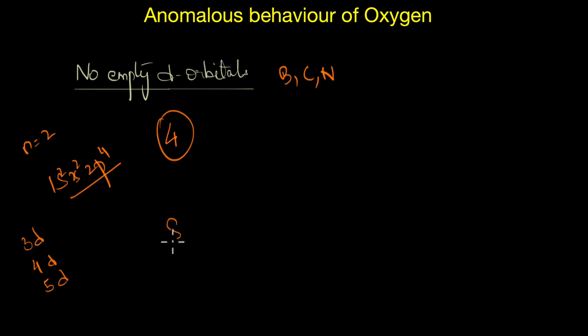For example, sulfur can easily form SF6 by expanding its octet or by using the empty d orbitals. But when oxygen combines with fluorine you will end up with something like OF2. You cannot expect something like OF6 as you observed in the case of SF6. Now even though we say that the maximum covalency of oxygen is restricted to 4, it practically never even exceeds 2 except probably when it forms hydronium ions H3O+ where you can see that there are two covalent bonds between oxygen and hydrogen and a coordinate covalent bond where it has donated its lone pair of electrons to a proton. So this is one of the instances where oxygen extends its covalency beyond 2.